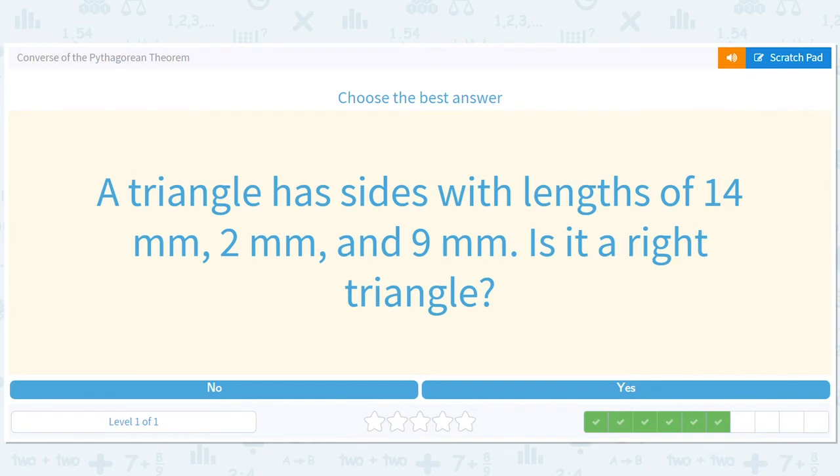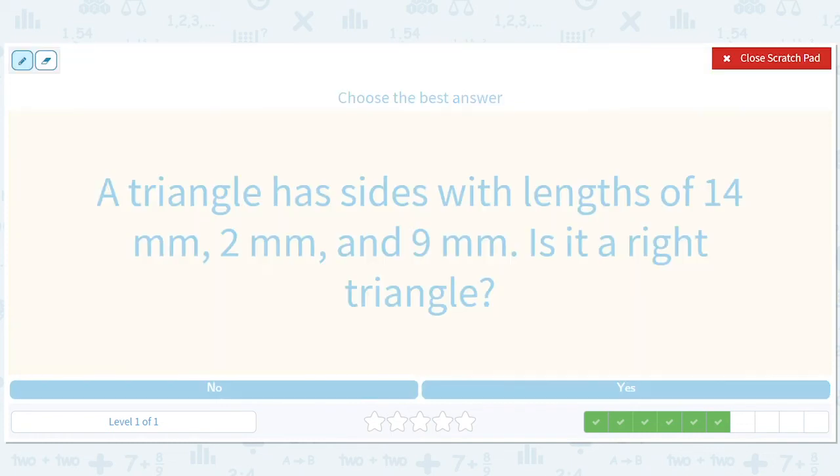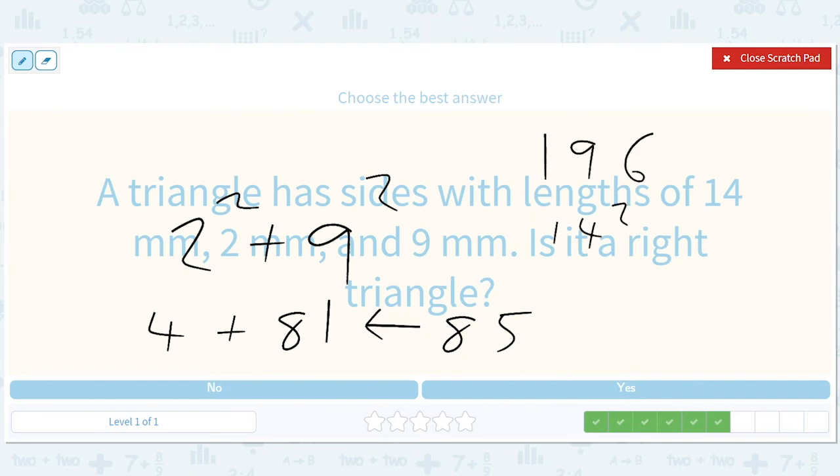A triangle has sides with lengths 2, 9, and 14. Is it a right triangle? This we have to be more honest about. So we do 2 squared plus 9 squared. That's 4 plus 81, which is 85. And 14 squared is 196. You don't even have to work it out because it's bigger than 10 squared, which is 100. This is 85. Even if you don't know exactly what 14 squared is, it's not equal to 85. So no.